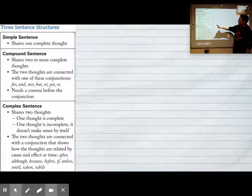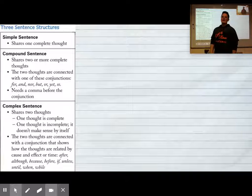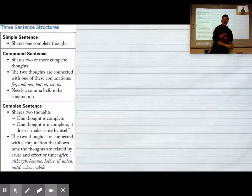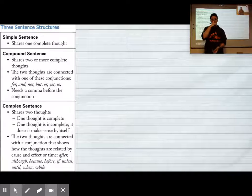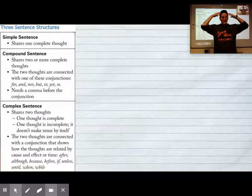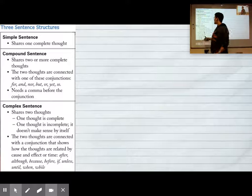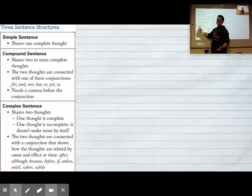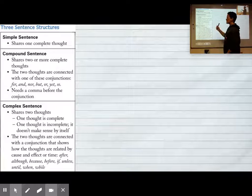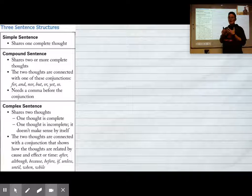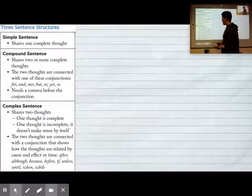Then a complex sentence is where one thought is incomplete and one thought is complete. This is the one that made me feel like I don't know what I'm doing, but it's really not as complex as it sounds. It's one complete thought and then a partial thought, or part of a thought.